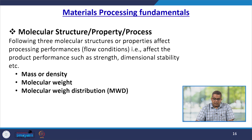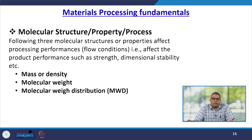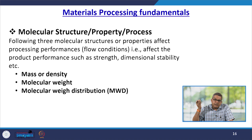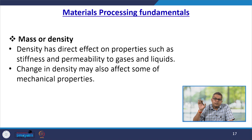Let us talk about molecular structure, property, and process. Three molecular structures or properties affect the processing performance and flow conditions — which most concern us — and also affect product performance like strength, dimensional stability, etc. The first is mass or density. Density has a direct effect on properties such as stiffness and permeability to gas or liquid, and a change in density may also affect mechanical properties.